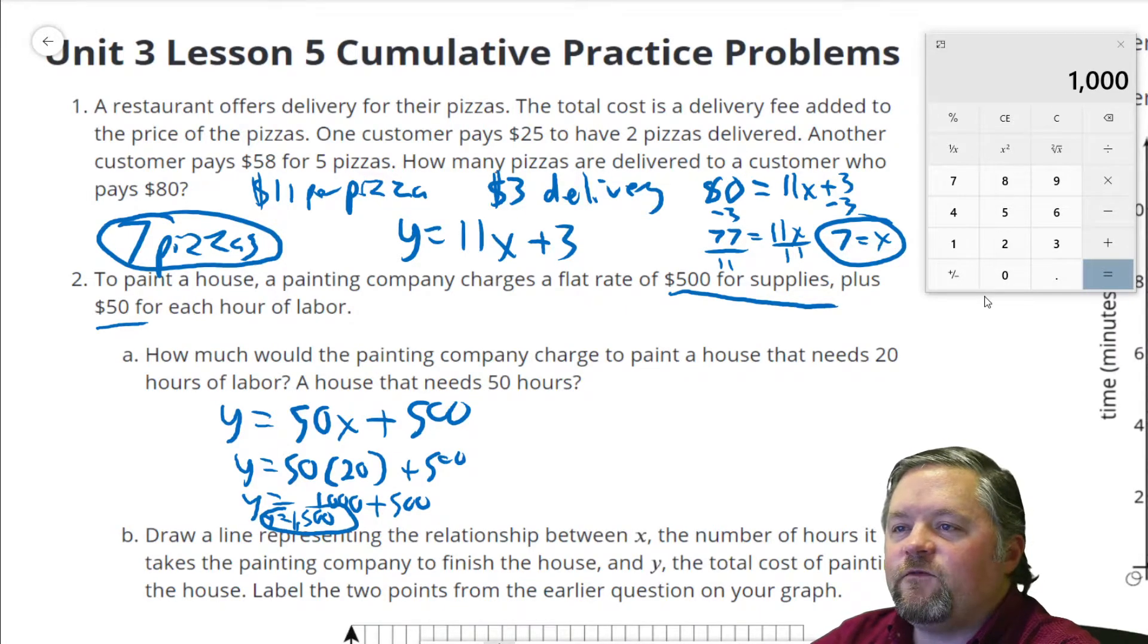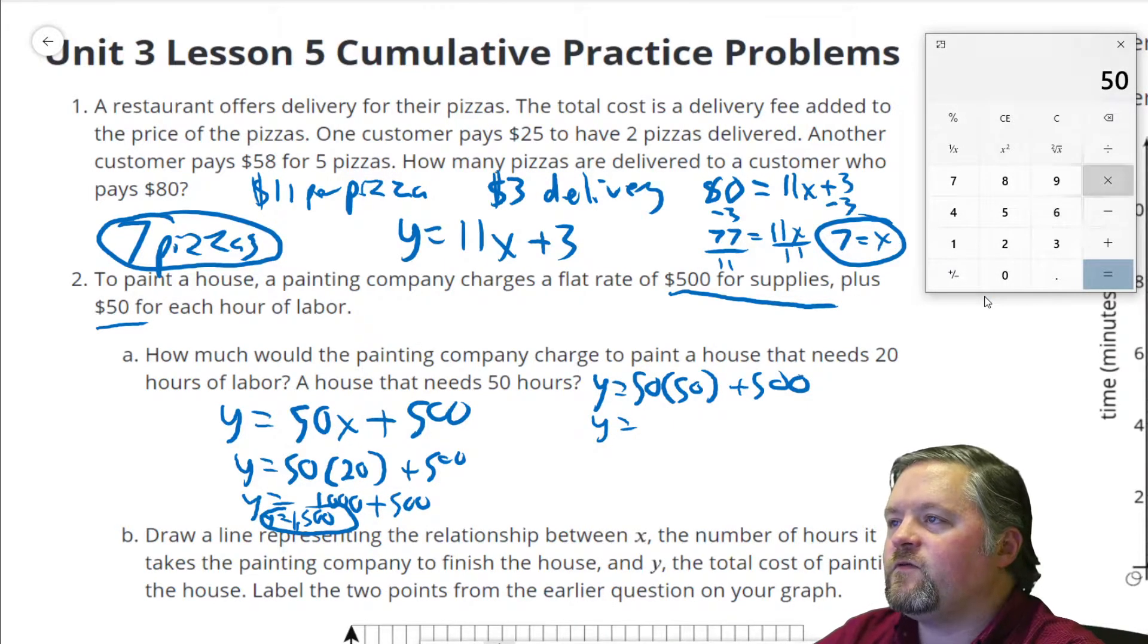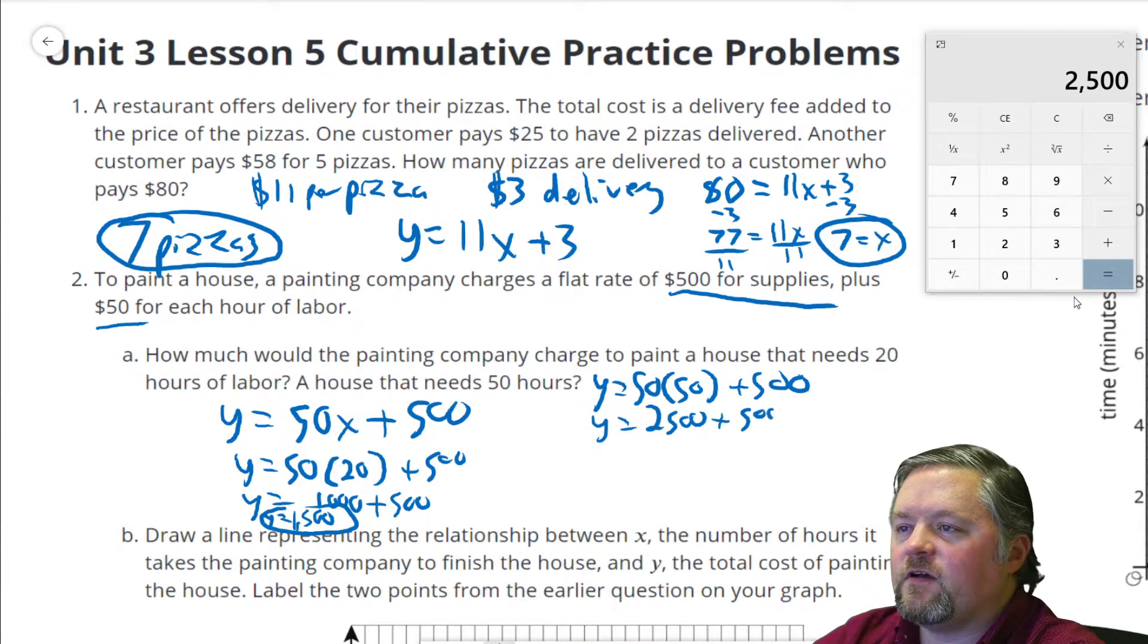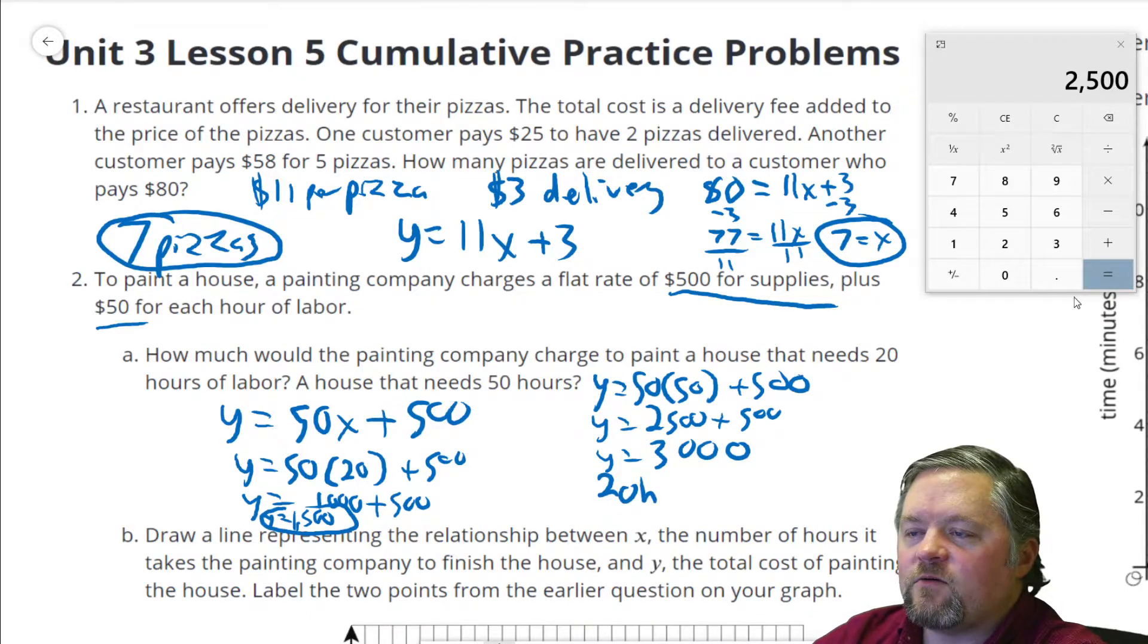How about a house that needs 50 hours? We can do the same thing. Y equals 50. Substitute in for x, 50 hours plus $500. Y equals 50 times 50. 50 times 50, $2,500, plus $500 for supplies. Add those together, that's $3,000. So, 20 hours was $1,500, and 50 hours was $3,000.